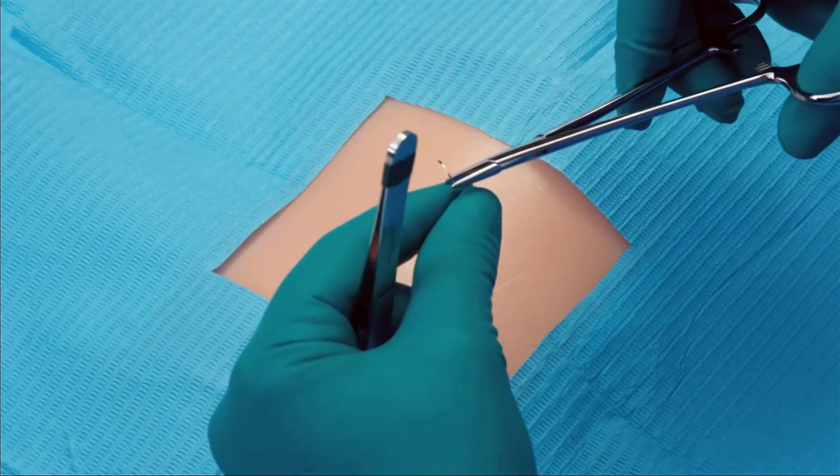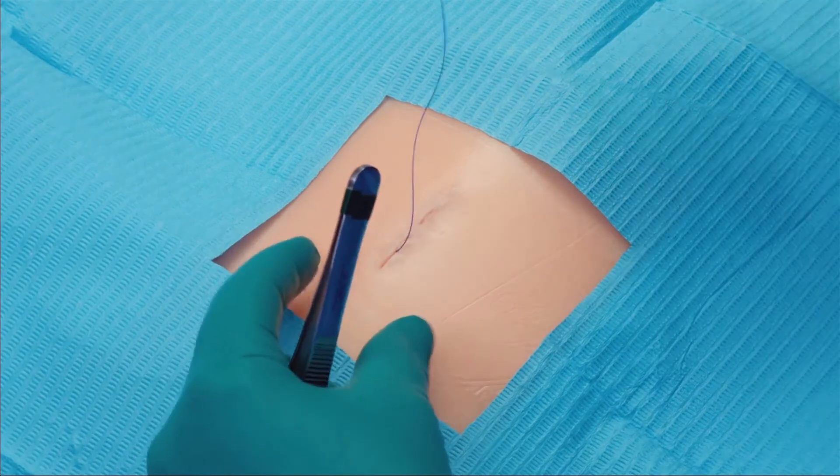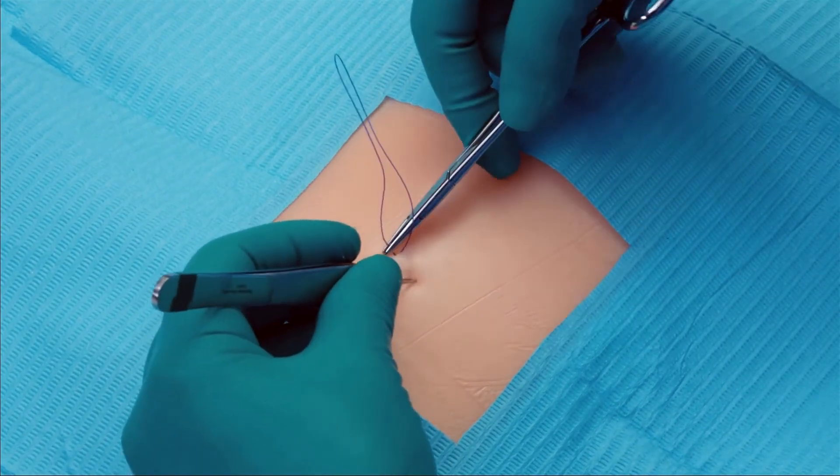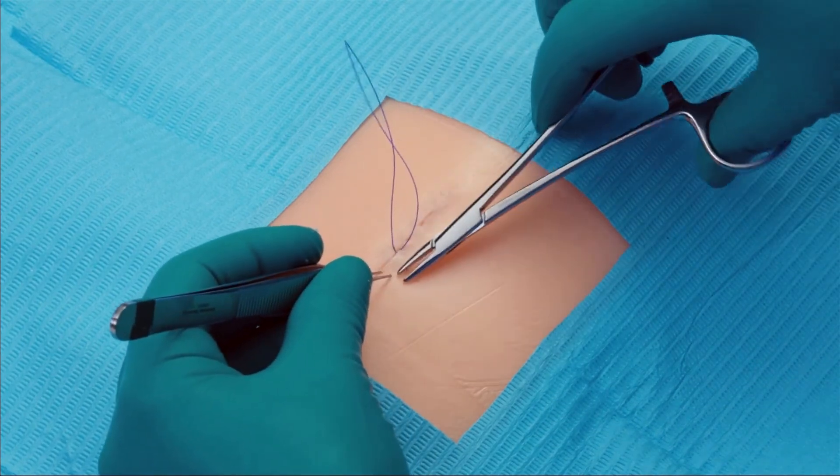Once the backstitch is complete, simply exit lateral to the incision, coming out of the superficial skin, and then cut flush.